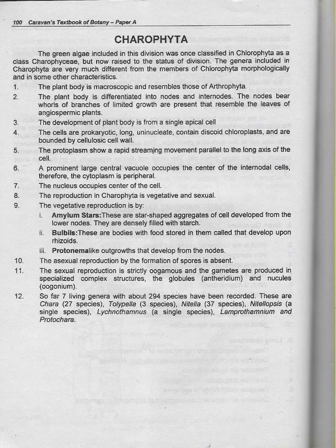Number 2: Bulbils are bodies with food stored in them, and they develop upon rhizoids. Number 3: Protonema are filamentous outgrowths that develop from the nodes.